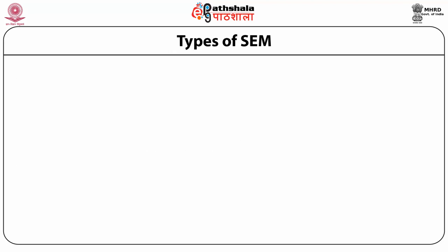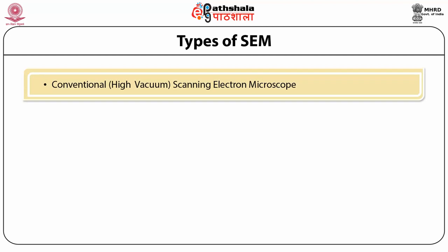The first type is the conventional scanning electron microscope with high vacuum, which is the most common type. It requires a dry, conductive sample, which can be achieved by applying a thin layer of metal to the surface using a technique called sputtering. The sample must be able to withstand high vacuum. This type of machine is used for routine imaging using either secondary electrons or backscattered electrons, with both secondary electron and backscattered electron detectors fitted to display images on a computer.